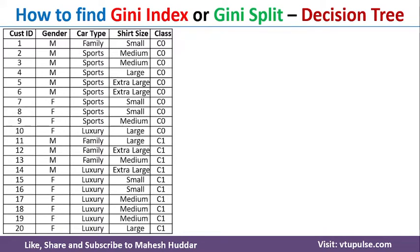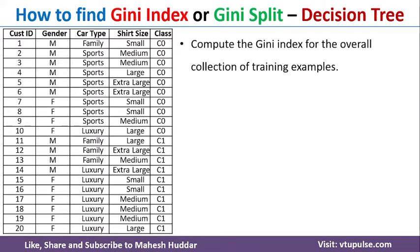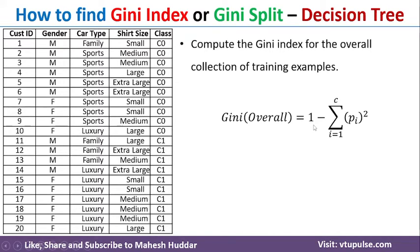Given this particular dataset, first we need to find the Gini index, and based on that Gini index, we need to select one of these attributes as the splitting attribute. First, we will find the Gini index for the overall dataset. The equation for Gini index is: Gini = 1 minus the summation of Pi squared, for i from 1 to C.